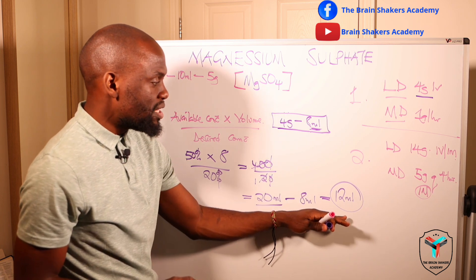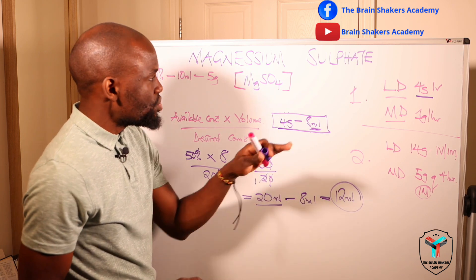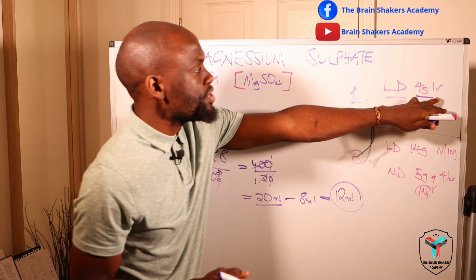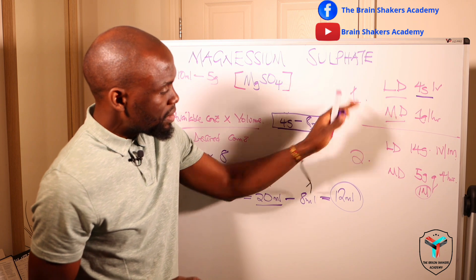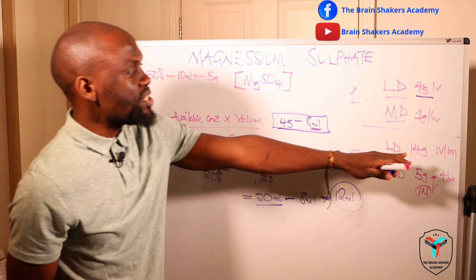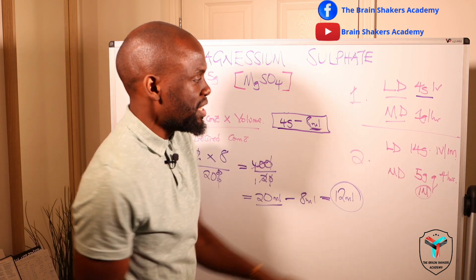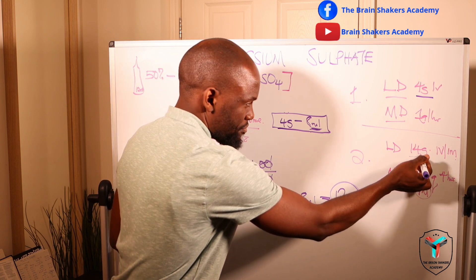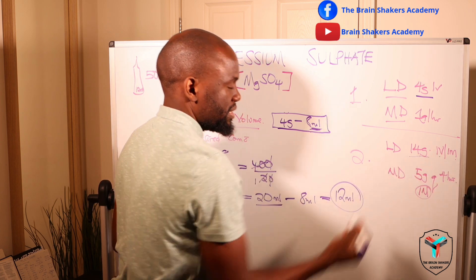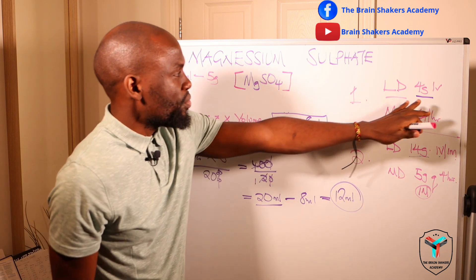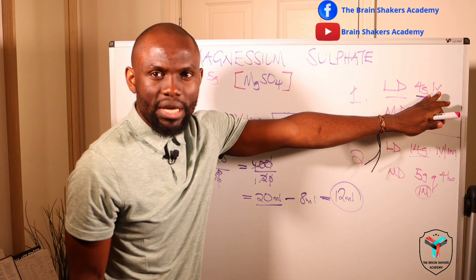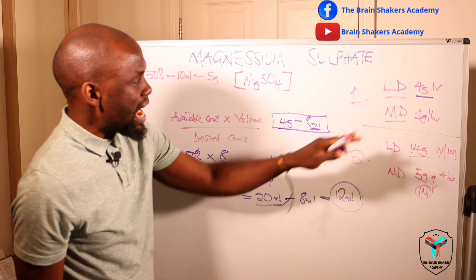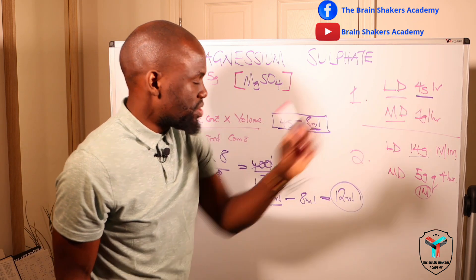This 20 mL loading dose is given IV slowly over no less than 5 to 20 minutes. Whether you are using method 1 or method 2, there is still an IV component to administer. In method 2, the 4 grams within the 14-gram loading dose is also administered intravenously as 20 mL.